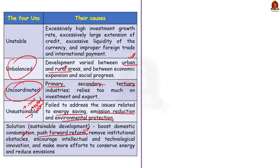The third strategy was innovation. To achieve sustainable growth, China sought to encourage intellectual and technological innovation. Investment in research and development as well as education played a crucial role in fostering innovation. The next strategy was energy conservation and emission reduction — China recognized the importance of addressing environmental concerns.